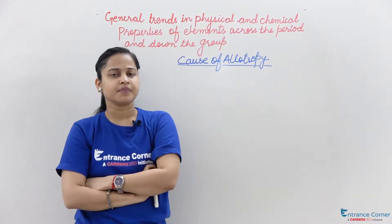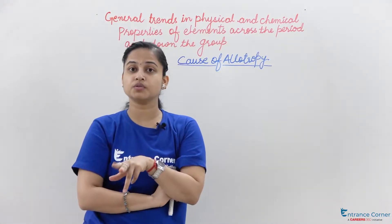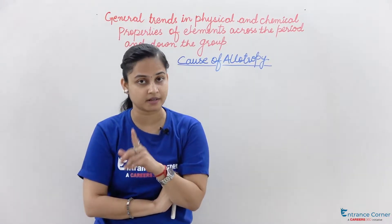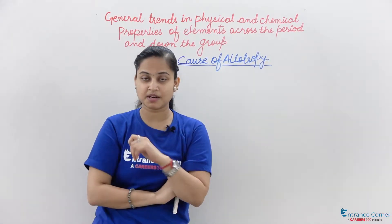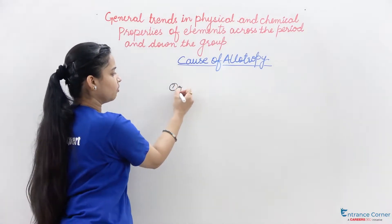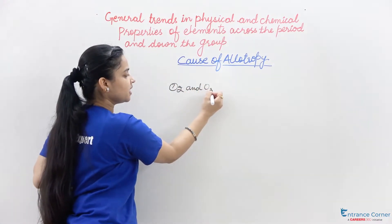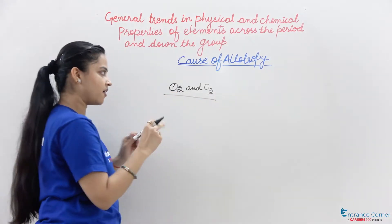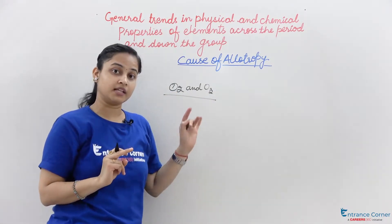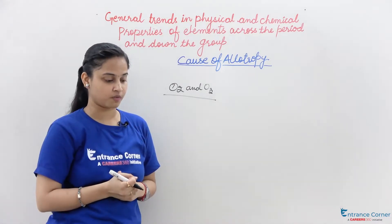Secondly, the cause of allotropy is also due to the presence of a different number of atoms — as I was talking about O2 and O3. These are the allotropes of oxygen having different numbers of atoms in them, and they both can exist in solid, liquid, and gaseous form.